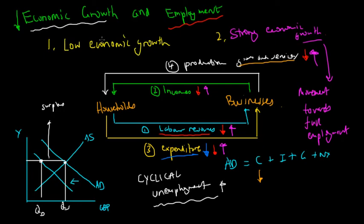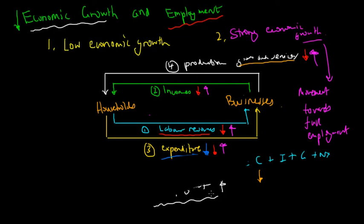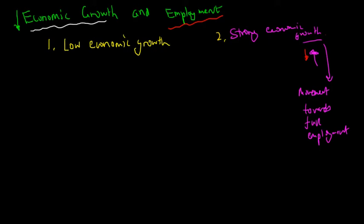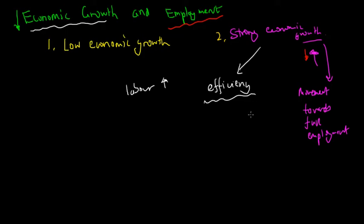When economic growth is high, demand for products is high, so businesses must produce more goods and services to satisfy demand, and to do that they hire more labour — that's the straightforward analysis. But consider the situation where businesses become more efficient, and that is why incomes have increased. Strong economic growth can also be driven by efficiency, not only by hiring more labour. This can be due to utilisation of capital or research and development.